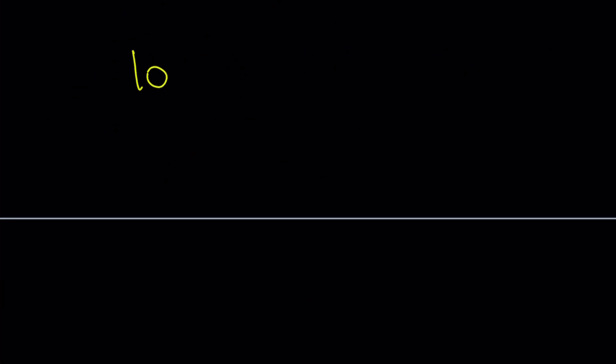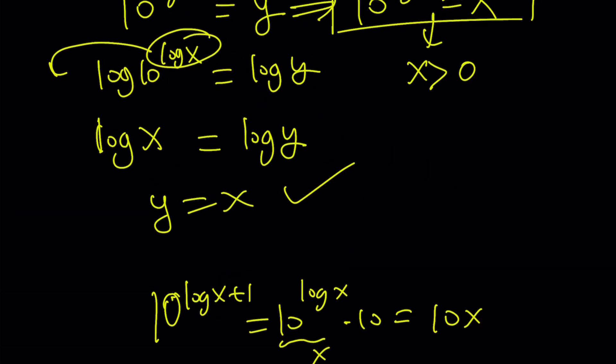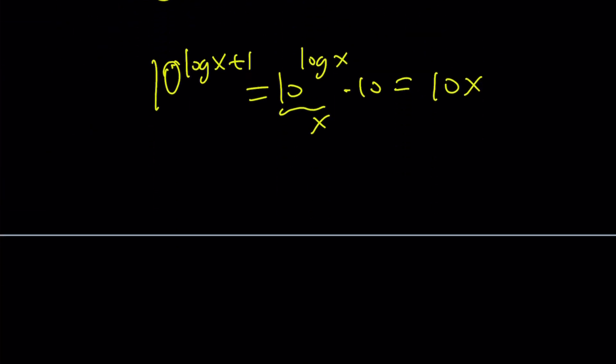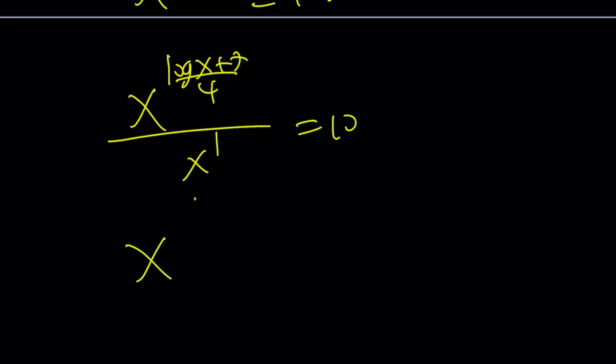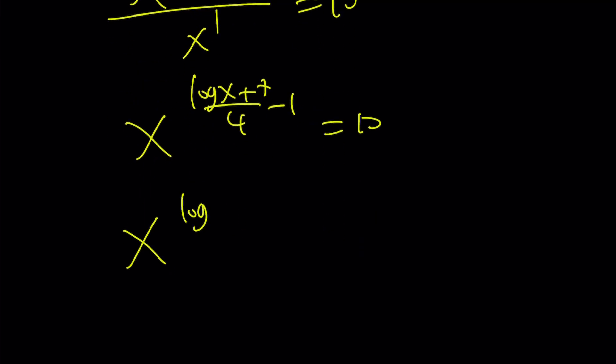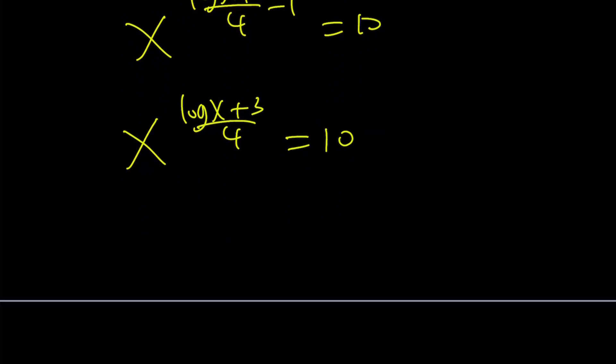So we have 10 to the power log x plus 1 equals 10x. But where does that come from? It comes from the left-hand side: x to the power log x plus 7 over 4 equals 10x. Then you can divide both sides by x. Subtract the exponents. This is x to the first power minus 1. If you make a common denominator, this gives you x to the power log x plus 7 minus 4, which is plus 3, divided by 4 equals 10.